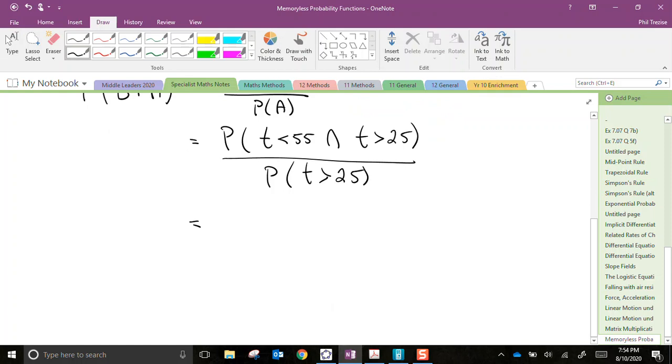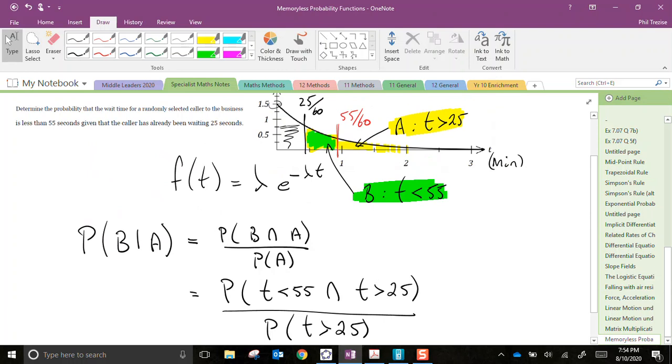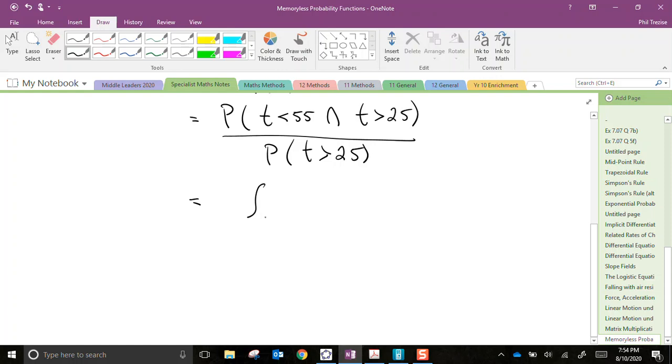So let's think about this again. If the time is less than 55, but it also has to be greater than 25, that literally represents the green-coloured patch. That's the successful outcomes. So that would be given as the integral from 25/60ths of a minute to 55/60ths of a minute of 1.5 e to the negative 1.5 t dt.